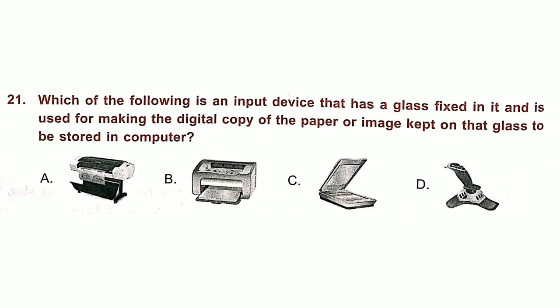Question 21. Which of the following is an input device that has a glass fixed in it and is used for making the digital copy of a paper or image kept on that glass, to be stored in the computer?